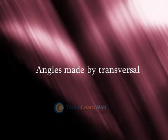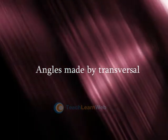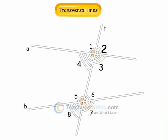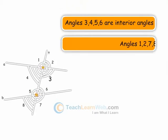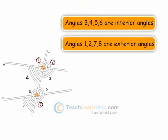Angles made by transversal. The eight angles marked 1 to 8 have their special names. Angles 3, 4, 5, 6 are interior angles. Angles 1, 2, 7, 8 are exterior angles.